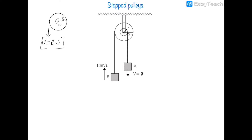In this question, block B is moving upward with a velocity of 10 meters per second, and block A will move downward with velocity v, which we have to find. We need to identify the sense of rotation: if block B goes upward, the pulley must be rotating in the clockwise direction. So the pulley is rotating clockwise with angular velocity ω, and the velocity of the point attached to block B is 10 m/s.